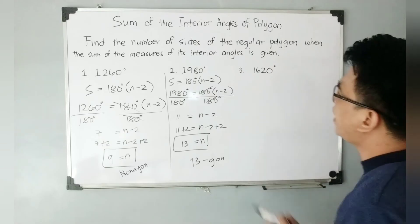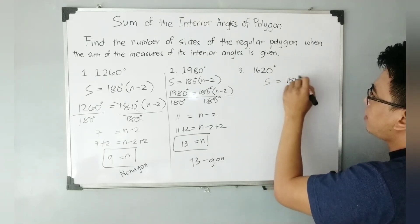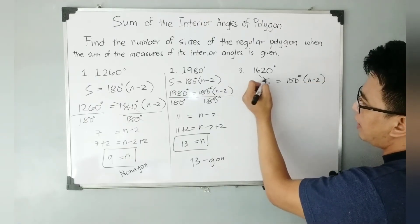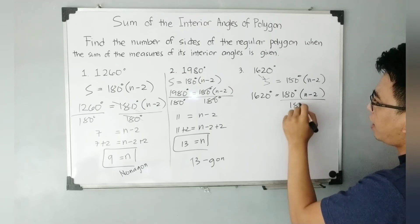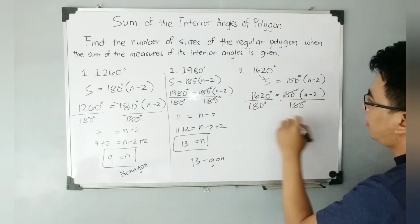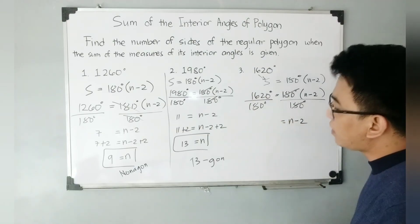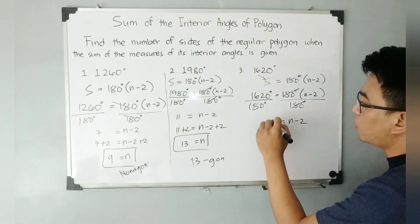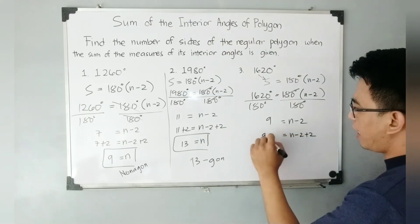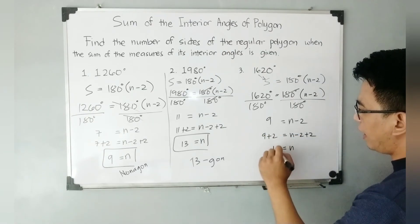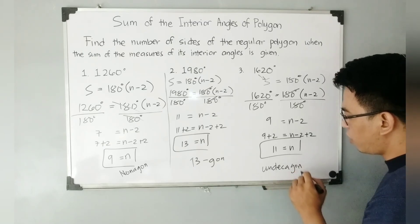For the last one, we have a sum of 1,620 degrees. Using the same formula, S = 180(N - 2), we substitute: 1,620 = 180(N - 2). Dividing both sides by 180, we get 1,620 ÷ 180 = 9, so 9 = N - 2. Adding 2 to both sides gives N = 11. This is a polygon with 11 sides, known as a hendecagon.